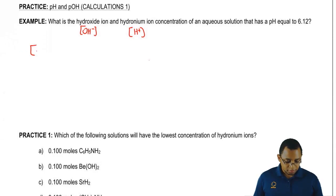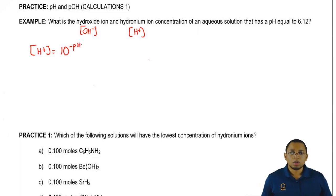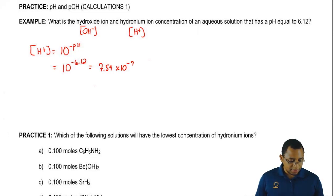Remember that H plus equals 10 to the negative pH. So all we have to do now is just take that number and plug it in. When we do that, we get 7.59 times 10 to the negative 7.